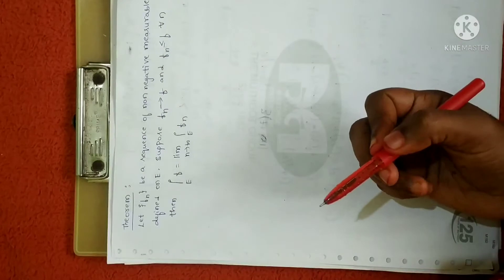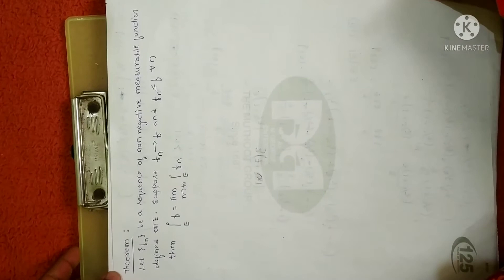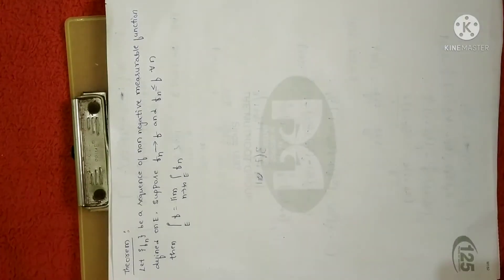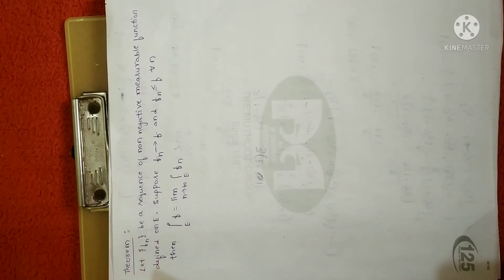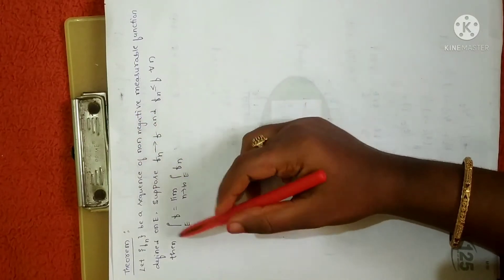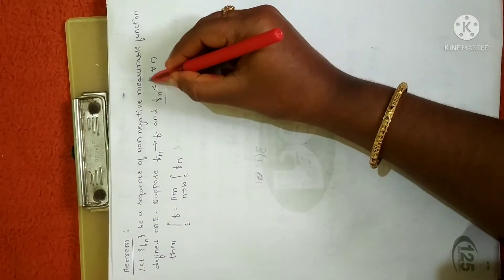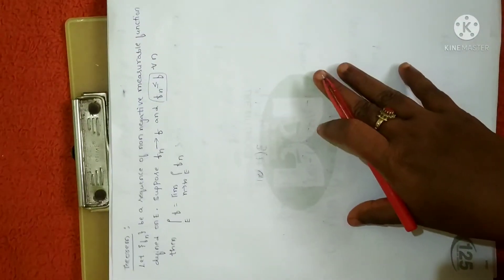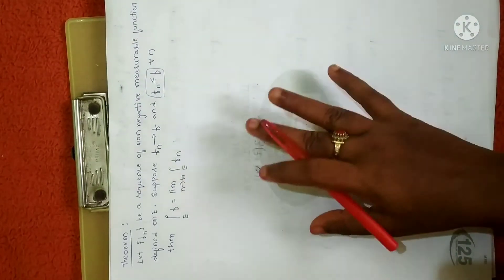When you see this statement it just resembles the monotone convergence theorem, but remember it is not the monotone convergence theorem. In each and every standard theorem you have to memorize the theorem statement perfectly without missing any single word. For the monotone convergence theorem you will get all these terms except this extra statement. So you have to memorize all theorem statements as they are.